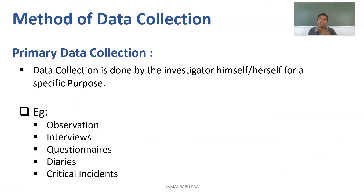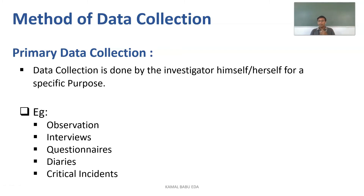Coming to the methods of data collection, we have primary data collection and secondary data collection. In primary data collection, data is collected by the investigator himself or herself for a particular purpose. Methods of primary data collection include observation, interviews, questionnaires, diaries, and critical incidents.